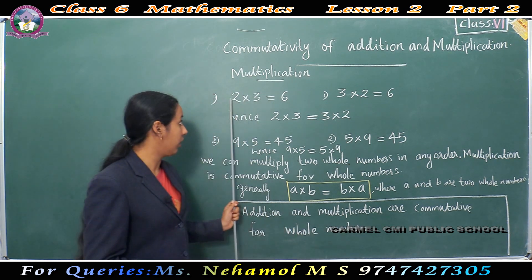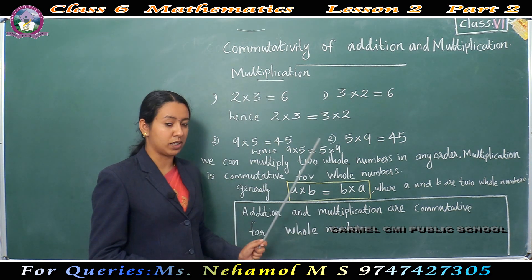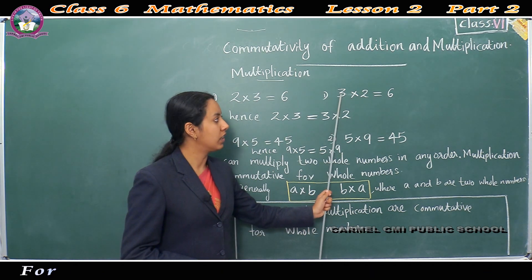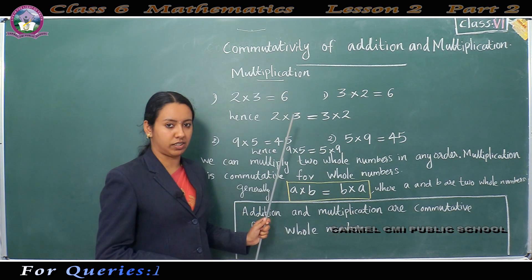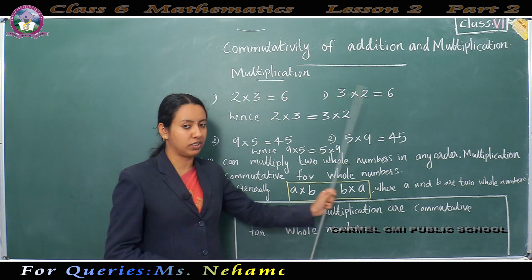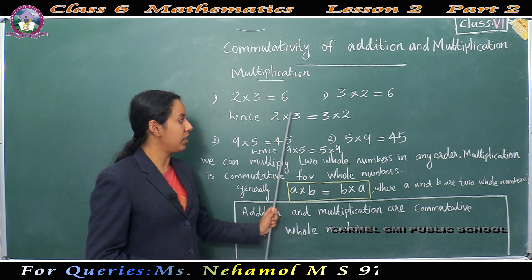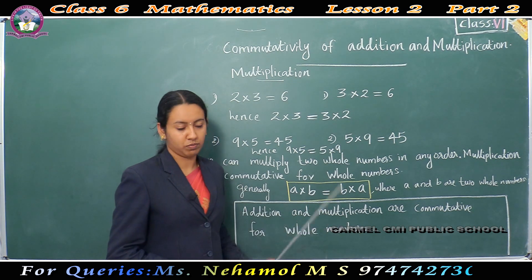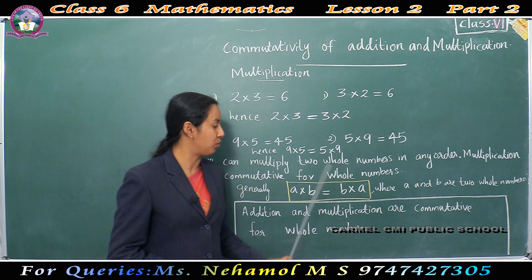What is the difference here? The numbers are the same, but the order is changed. Here, 2 into 3; here, 3 into 2. But the product — the answer — is the same in both cases. So, we can say 2 into 3 is equal to 3 into 2.